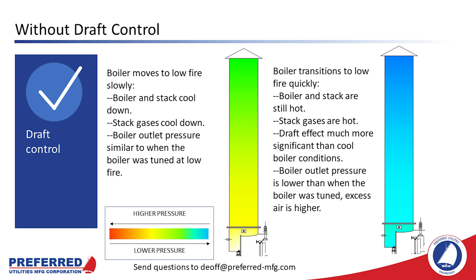In our thought experiment, we have a boiler running at high fire for several minutes so the boiler, flue gas, and stack all reach maximum temperature. Then, on the left boiler, we slowly decrease the firing rate over about 15 minutes. That gives time for the boiler, flue gases, and stack to cool down again, and the boiler outlet pressure goes back to what it was at low fire when the fuel ratio was dialed in by the startup technician. Everything is fine.